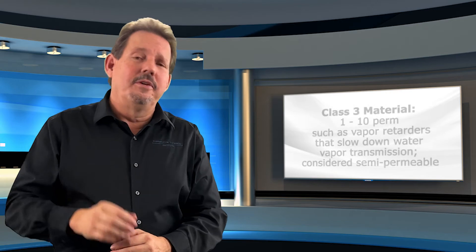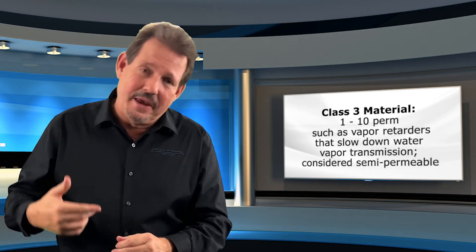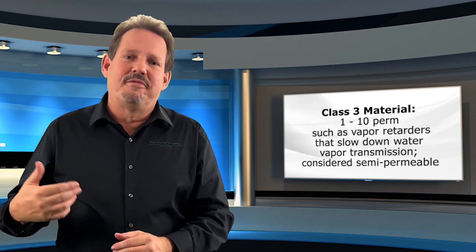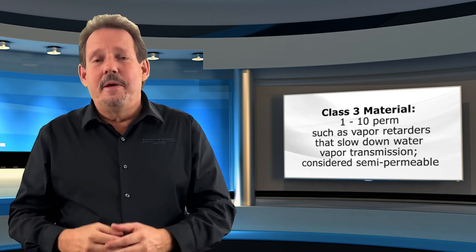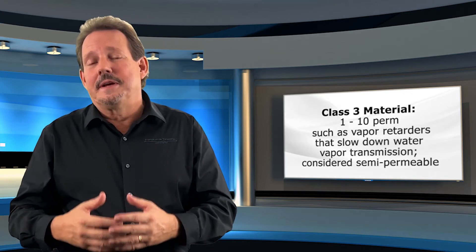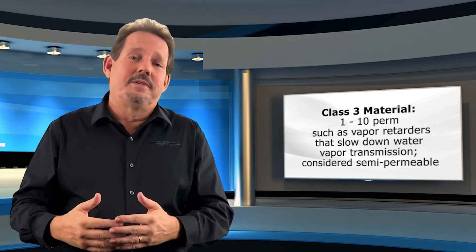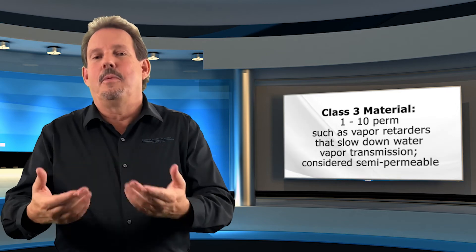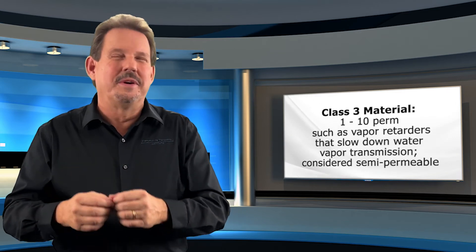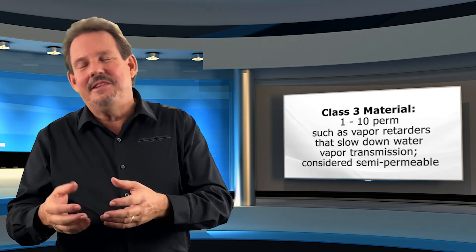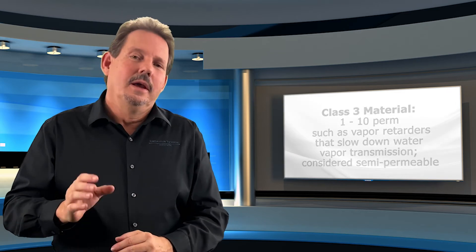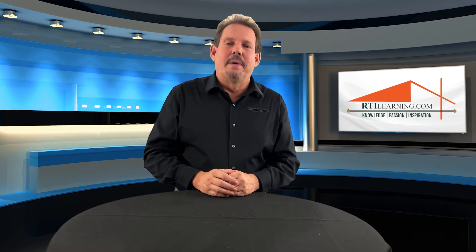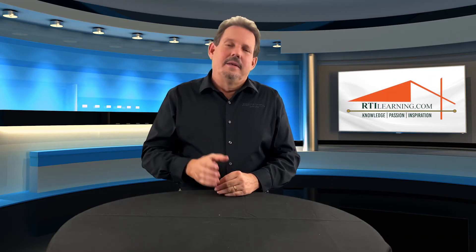Once we get above 1 to 10 perms, we're talking about vapor retarders. Vapor retarders are materials that will slow down the transmission, but water will move through them — not easily, but relatively easily. One of the things you can always think about is something like Tyvek.